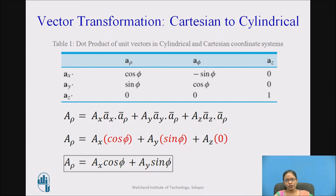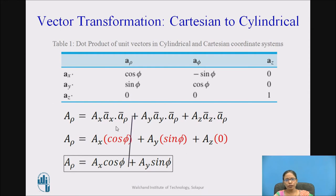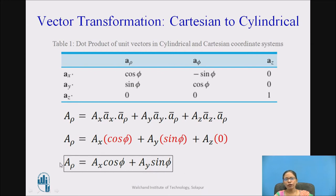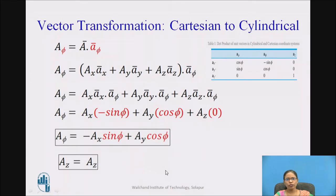Using the table: ax dot a_rho is cos phi, ay dot a_rho is sin phi, and az dot a_rho is 0. So a_rho equals Ax·cos phi plus Ay·sin phi. Once I know the values of phi, Ax, and Ay, I can find the actual value of a_rho. I will show a worked solution for one problem in this video.